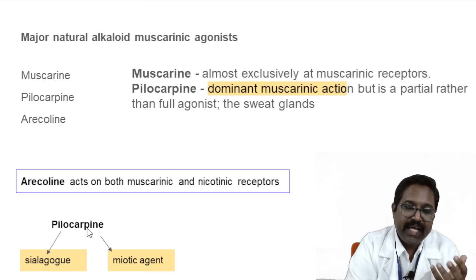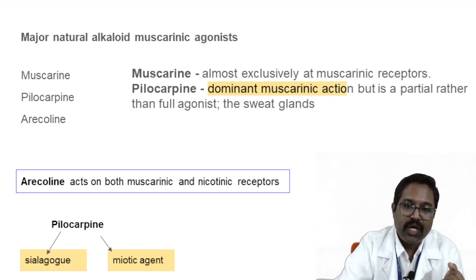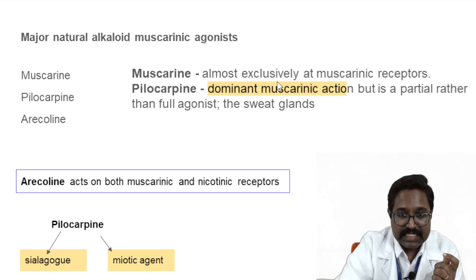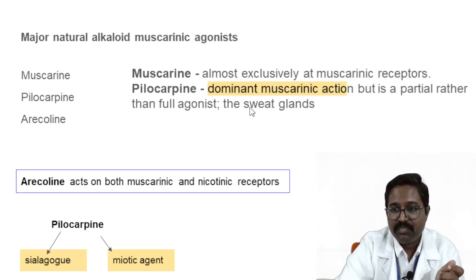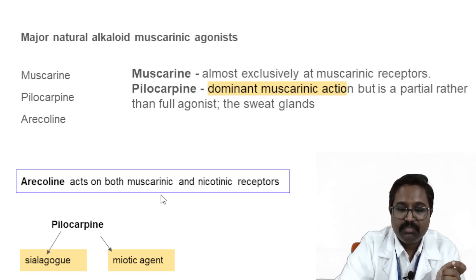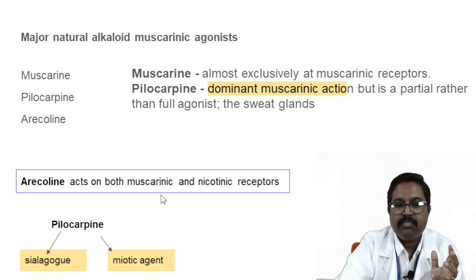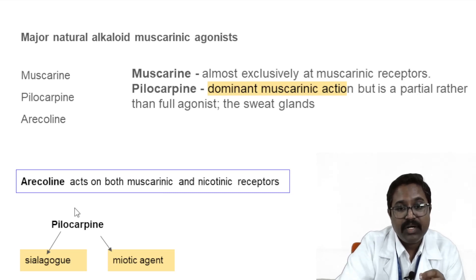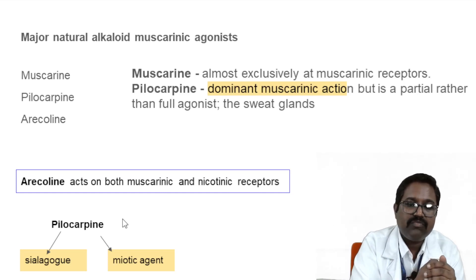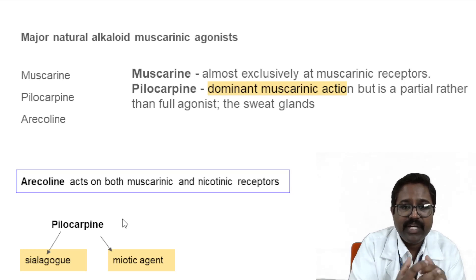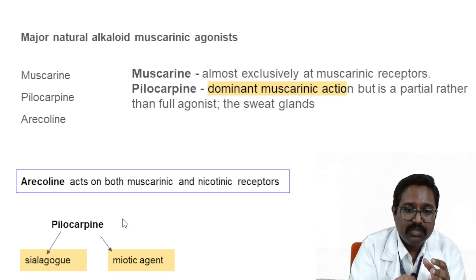The major natural alkaloids — muscarinic agonists derived from natural sources — include muscarine, pilocarpine, and arecoline. Muscarine exclusively acts on muscarinic receptors, whereas pilocarpine has predominant effect on muscarinic receptors. Arecoline has both nicotinic and muscarinic actions. Pilocarpine's importance is that it can be used as a miotic agent — decreasing pupil size — and for its sialogogue property, increasing salivary secretions. It can be used in conditions such as dry mouth and dry eye.